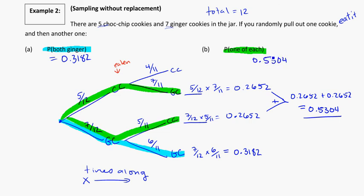Keeping in mind with probability trees: pay attention to whether the probabilities stay constant the whole way through or if they change from one situation to the next. Remember, you always multiply along the branches to find the individual probabilities, and if there's more than one of those that you need, you add them up together.